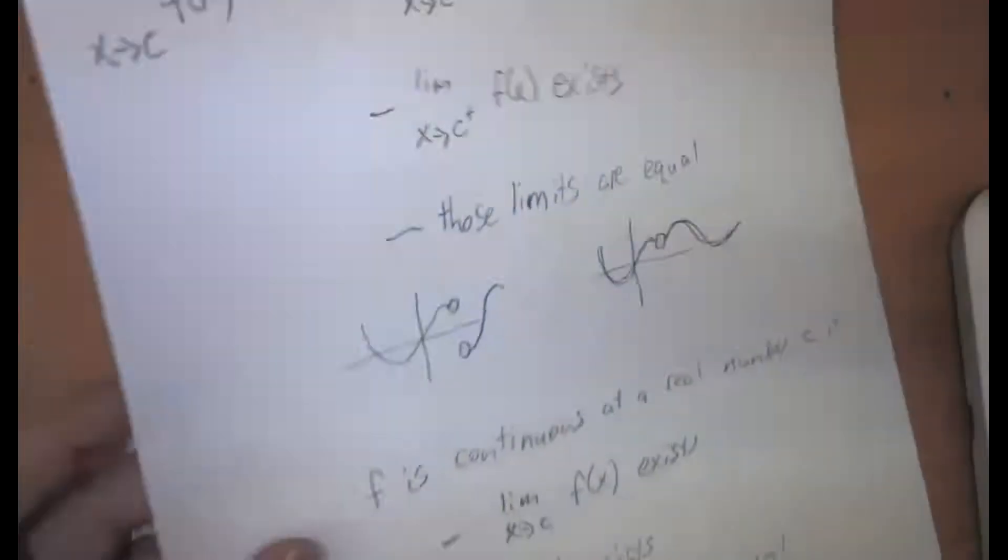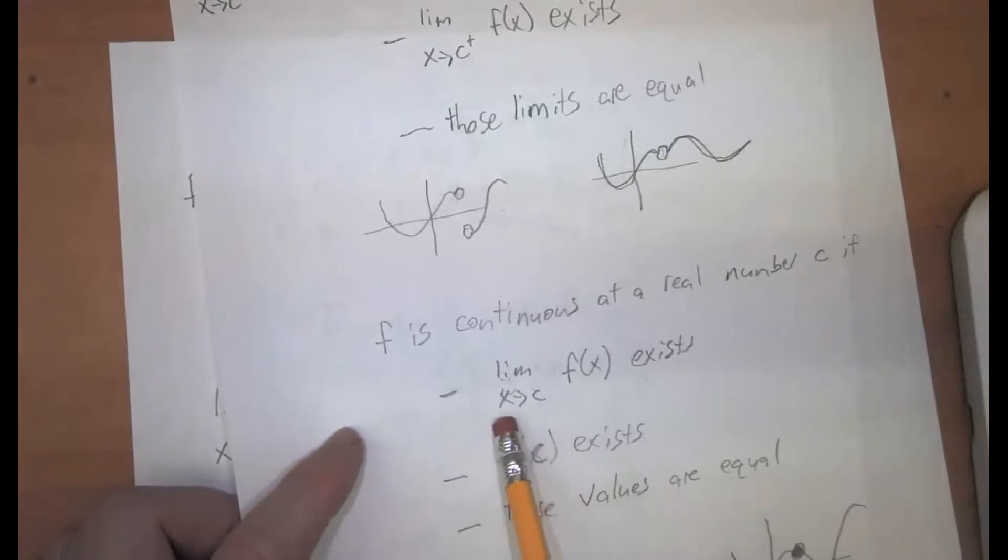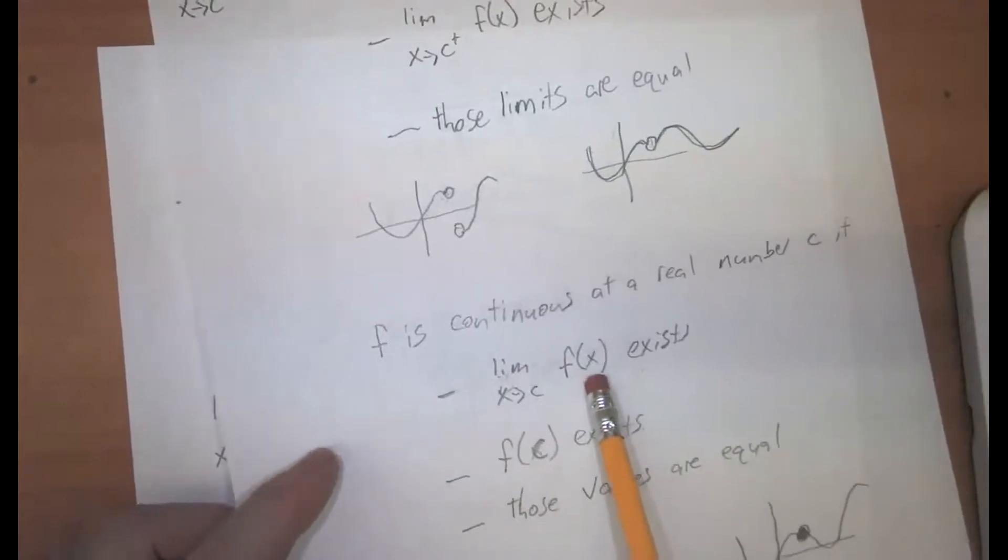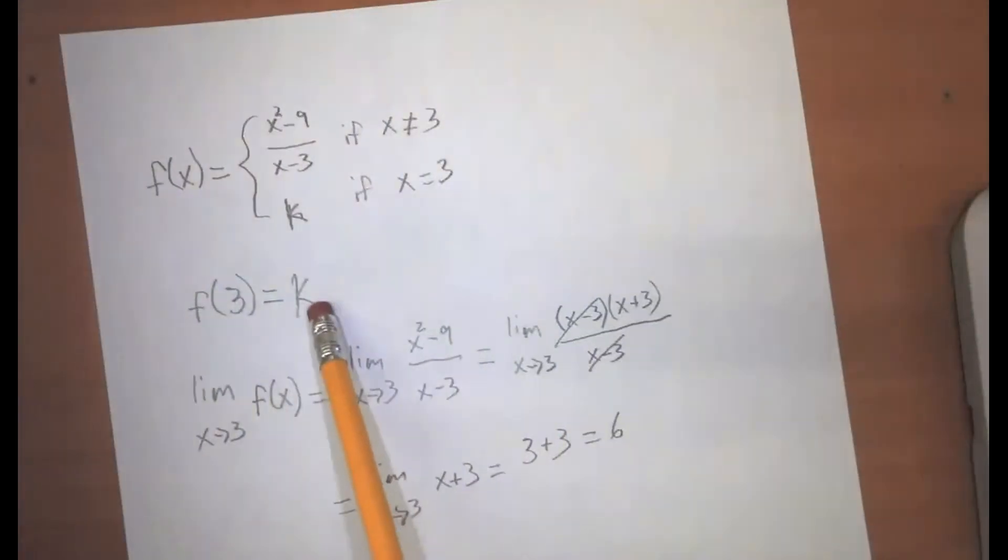So let's take a look at our condition. We need to make sure that f is continuous at 3. So, if the limit as x approaches 3 of f of x exists, yes, it's equal to 6. Does f of c exist? Yes, it's equal to k.